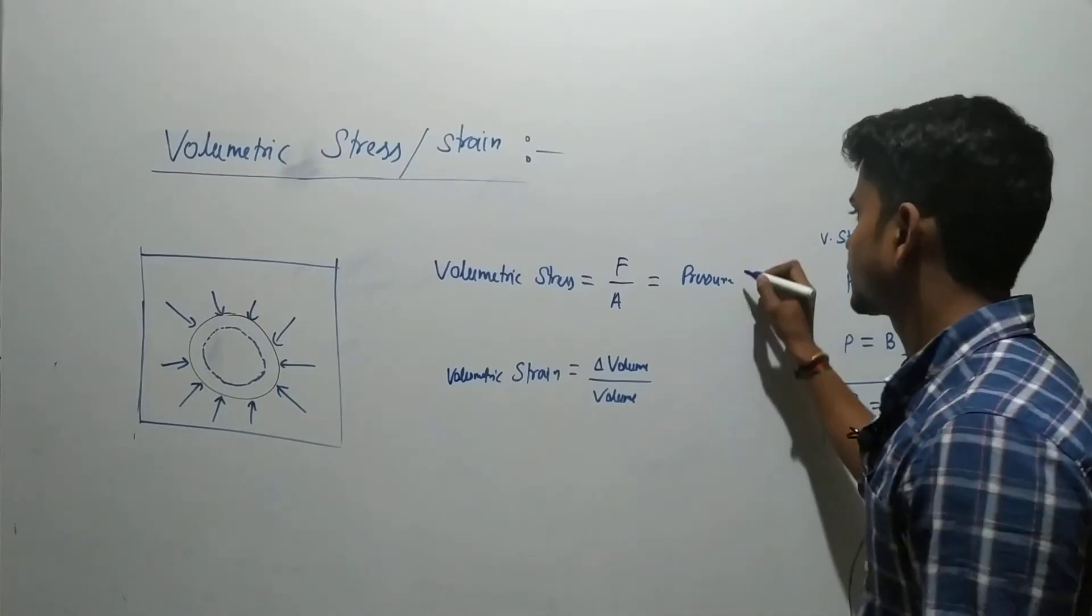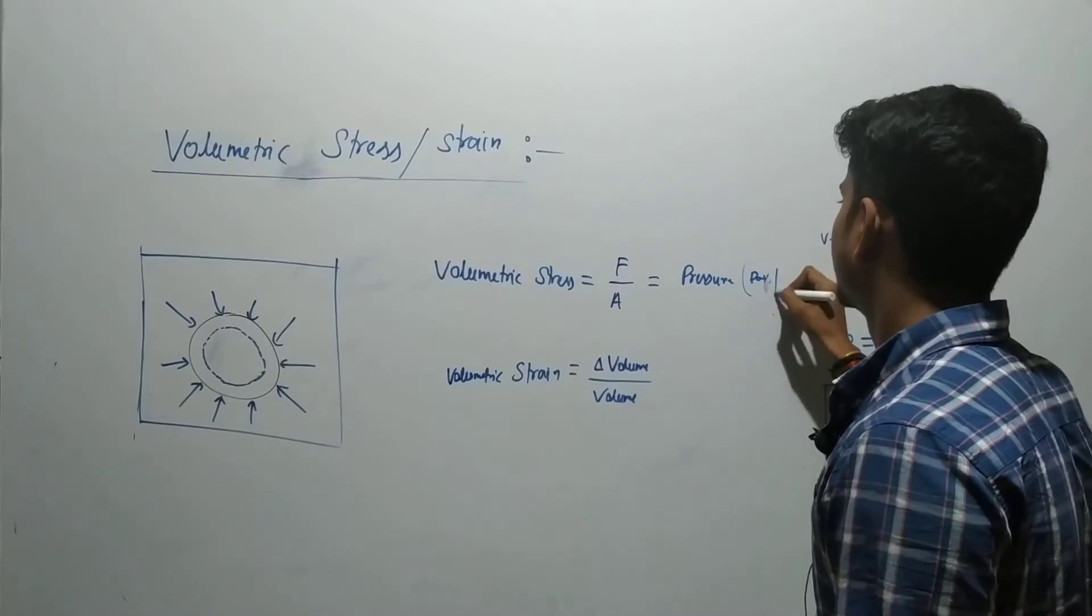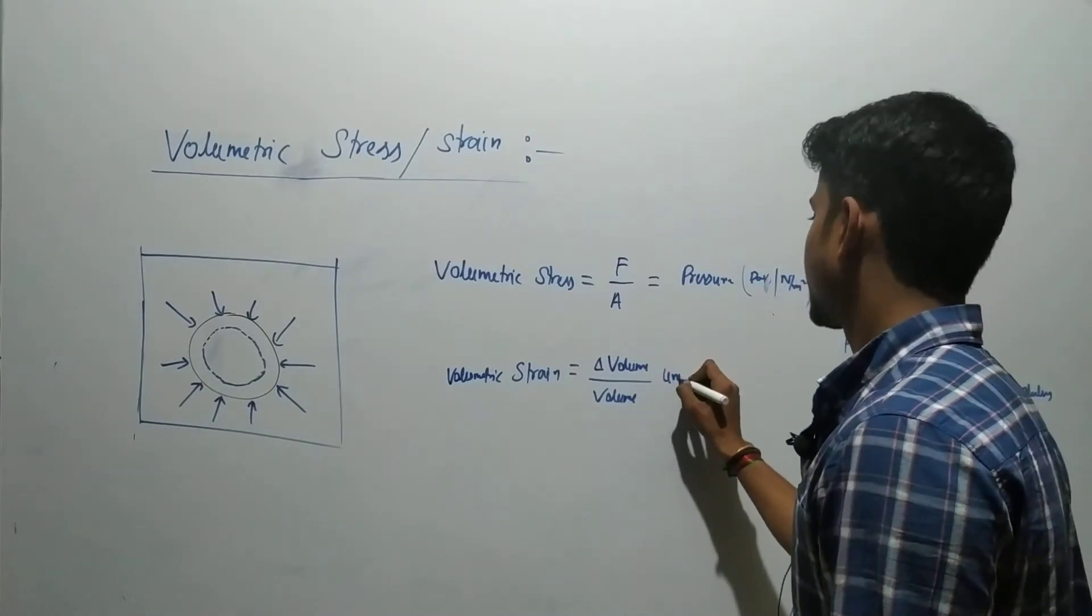Talking about the units: pressure is in Pascal (Newton per meter square), and strain is again unitless.